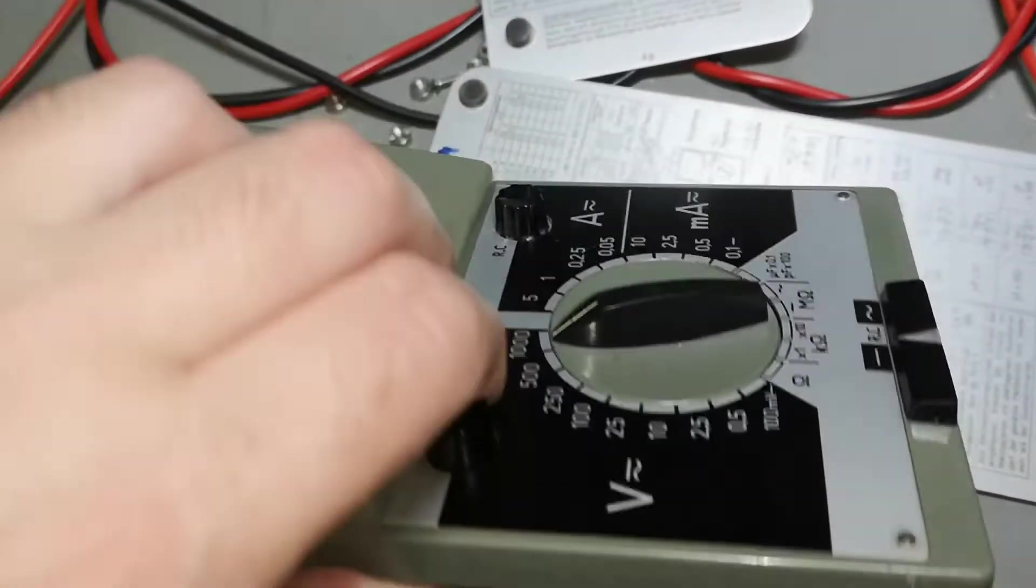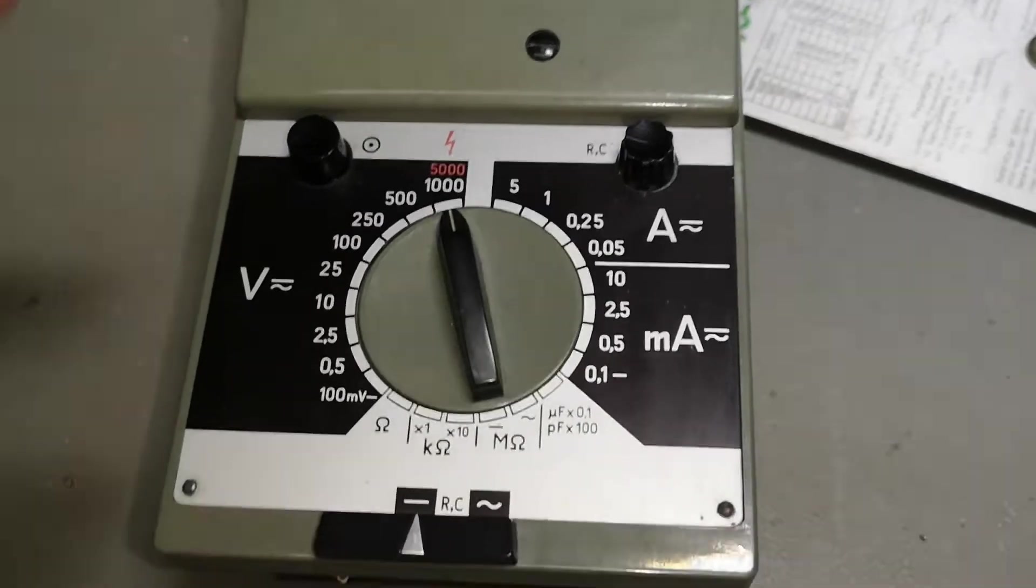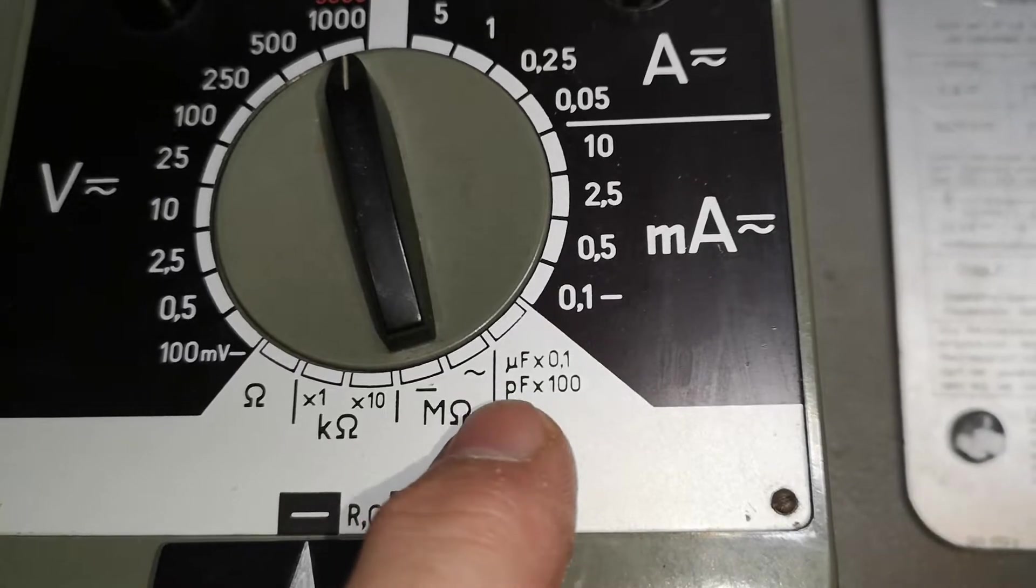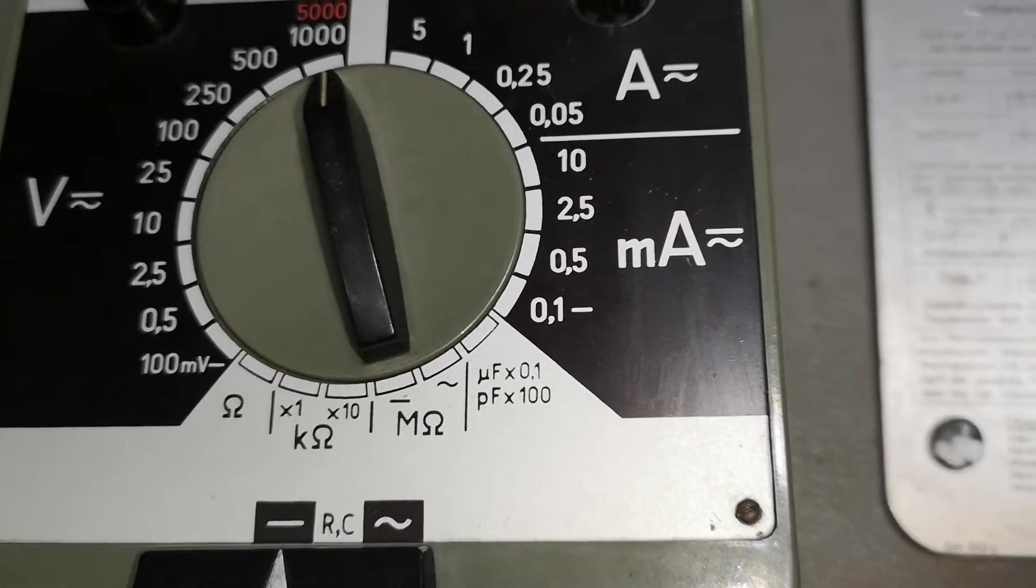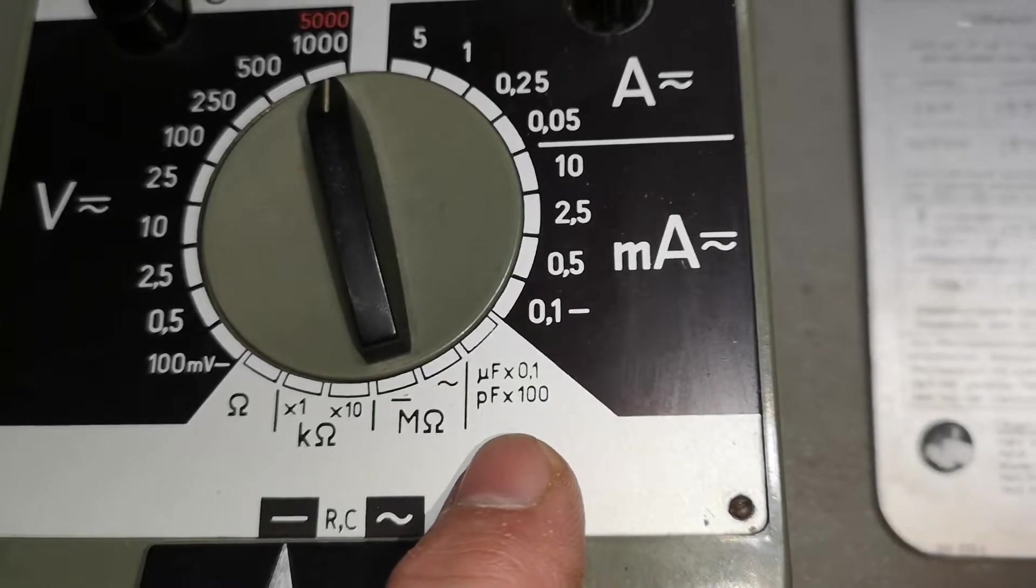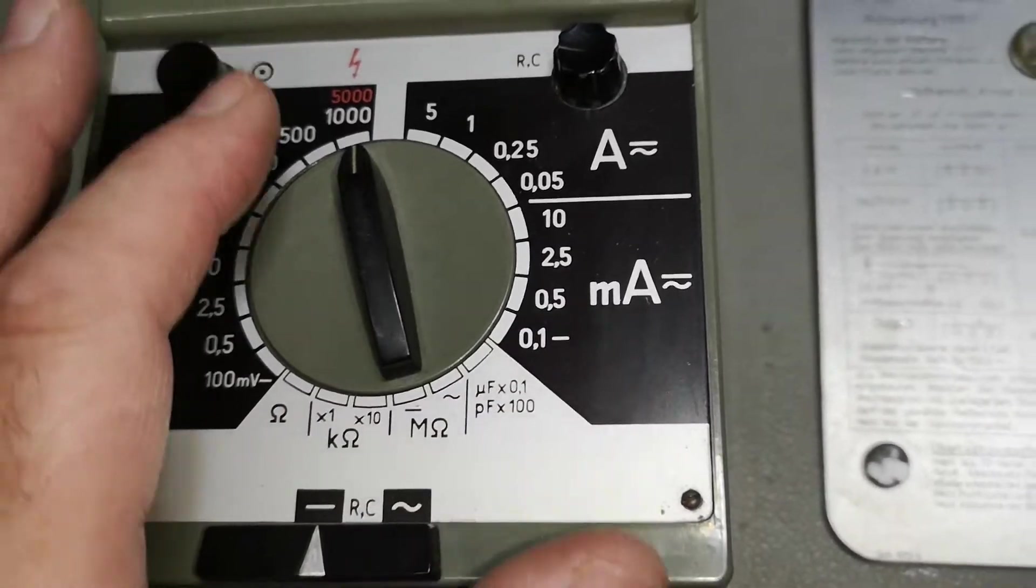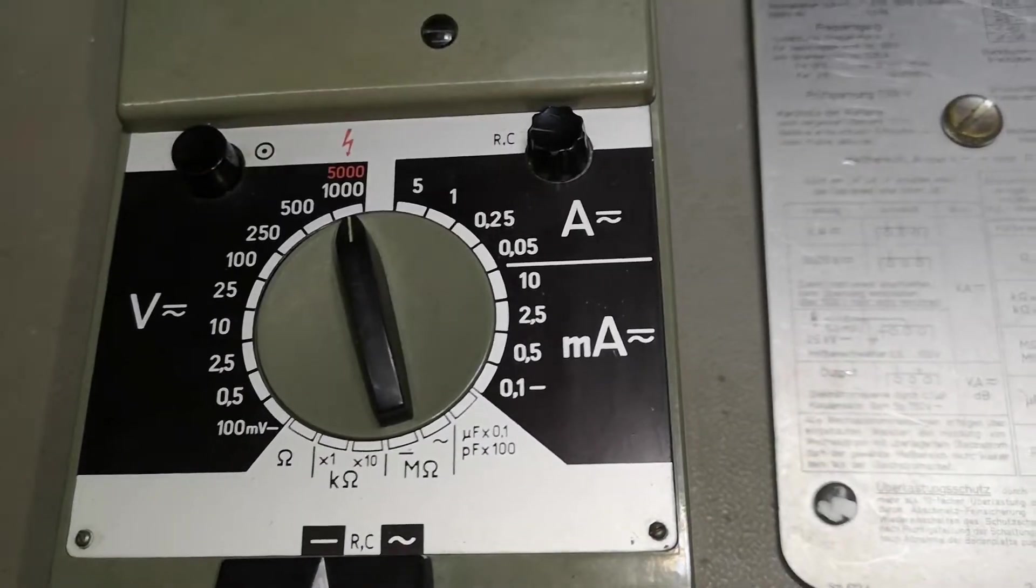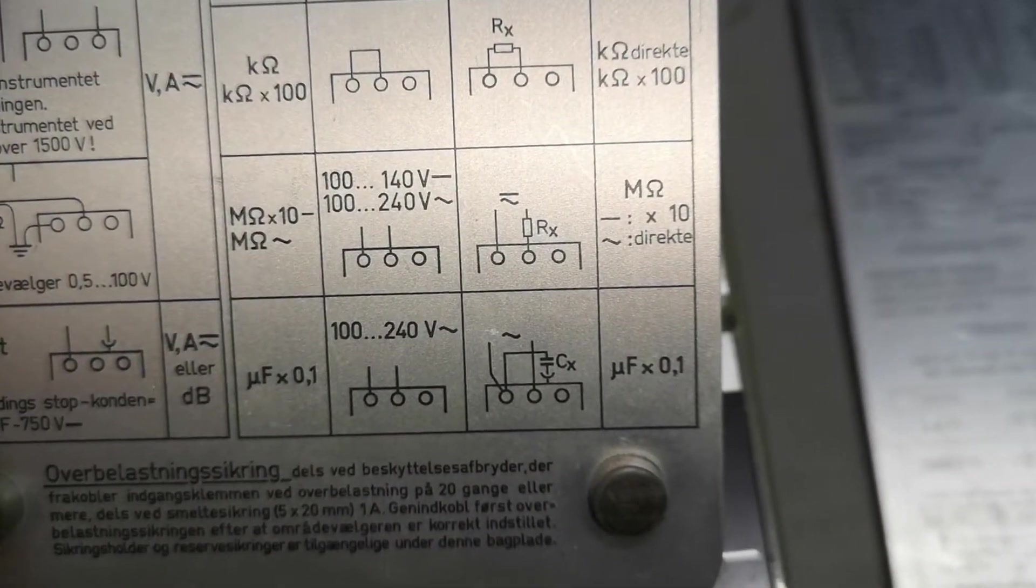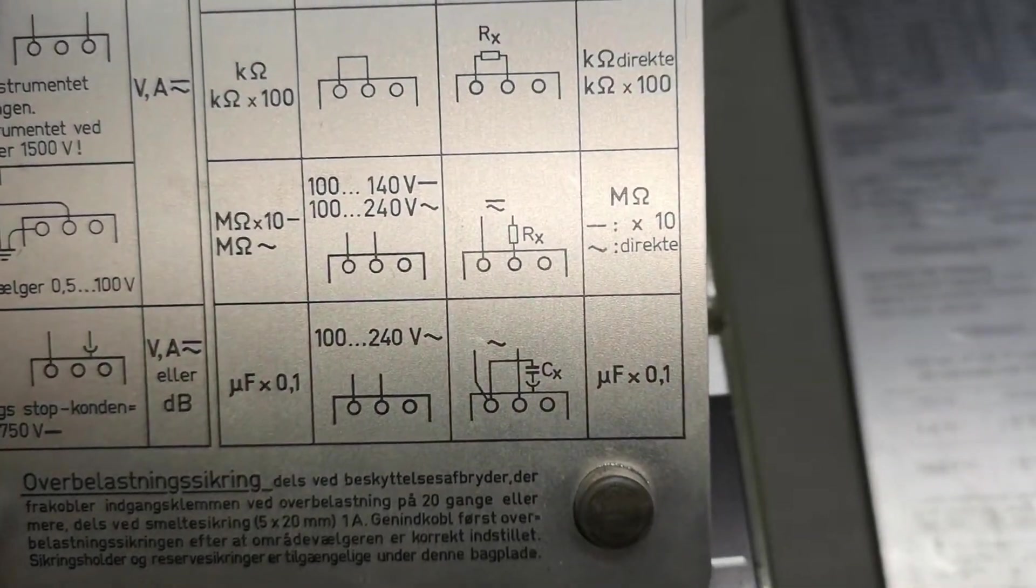What else are they doing in this model? The capacitance input got two different ranges as you can see here: microfarad times 0.1 or picofarad times 100. So how are they doing that? And again, like previous versions like the 4P we just talked about, the 4P only got one range and there's only one way to connect the capacitor.